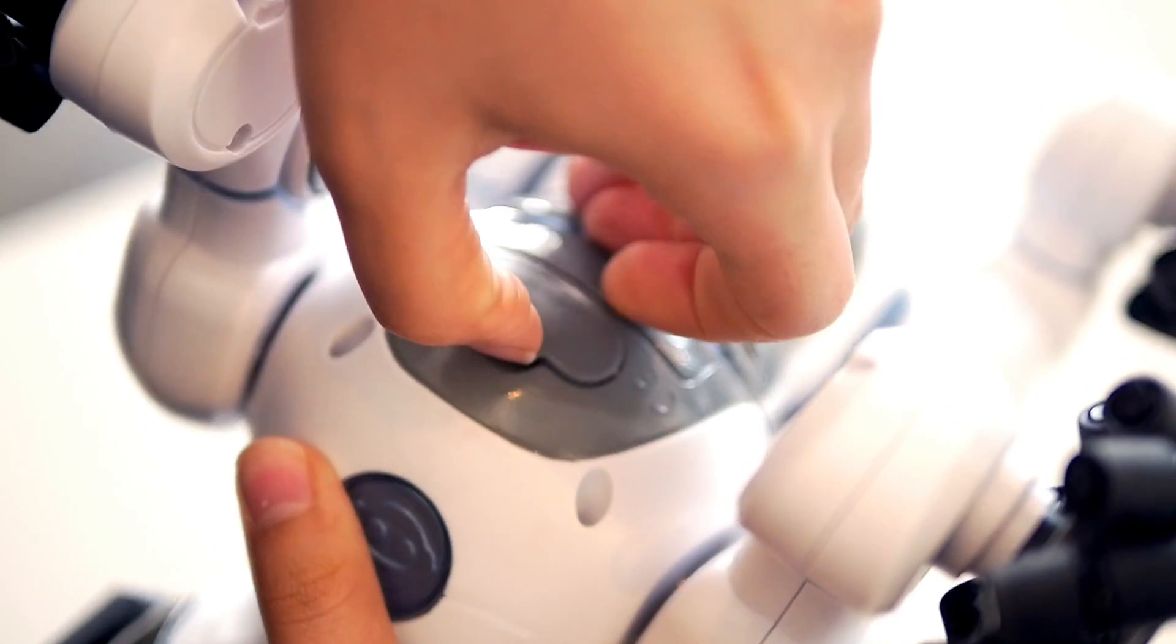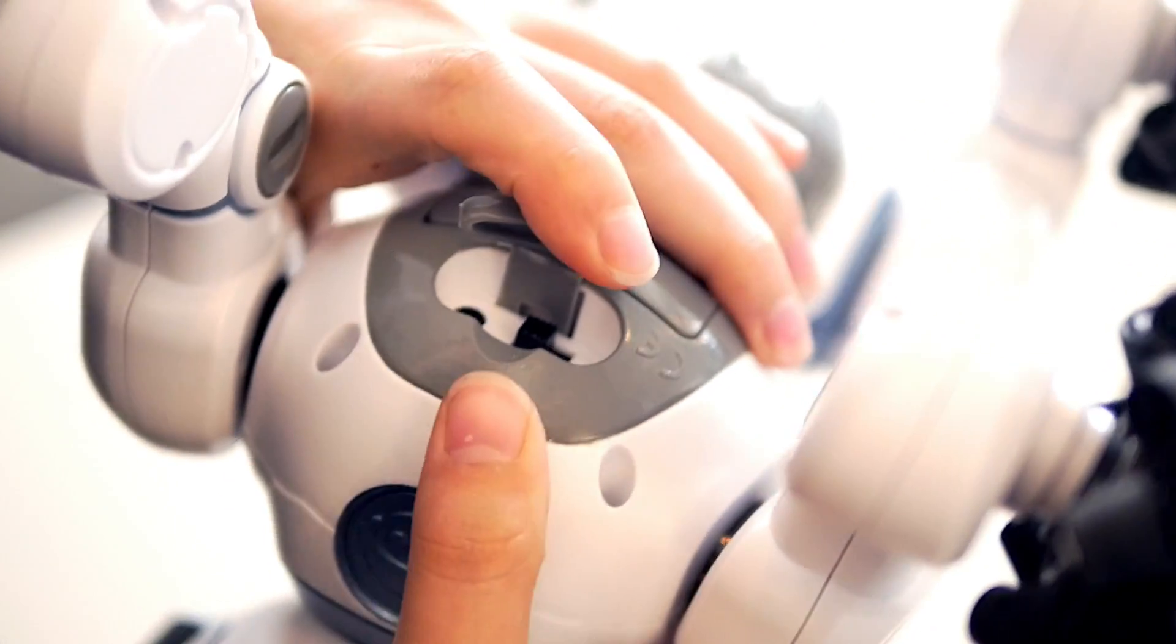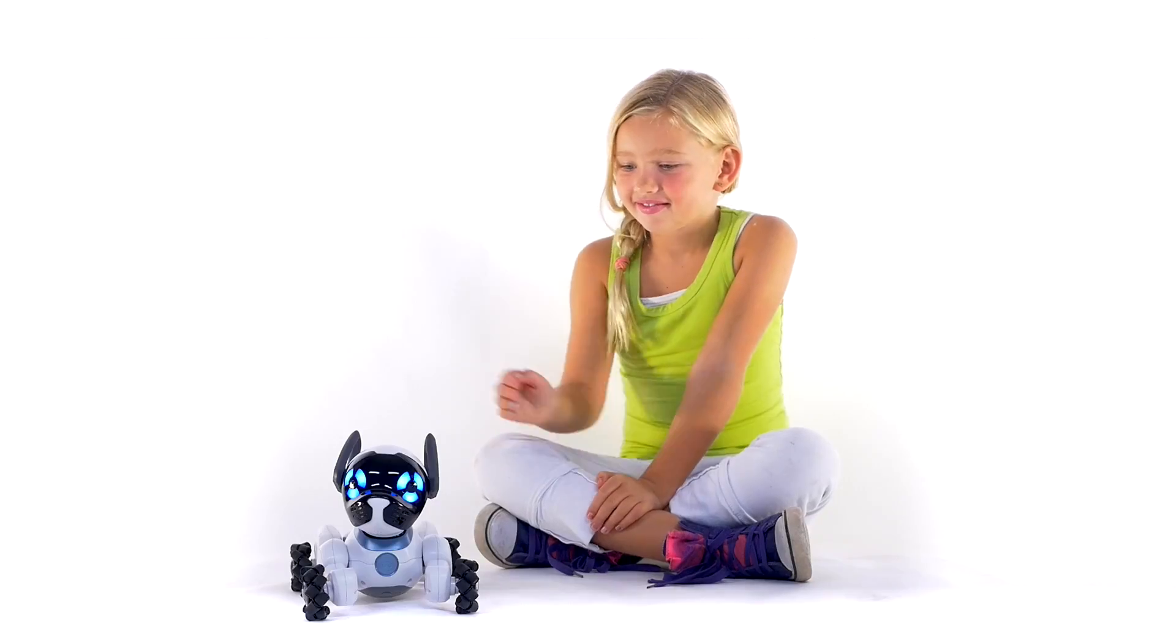First, we'll need to turn Chip on. Lift the flap underneath his belly and hit the on switch. There are many different ways to control and play with Chip, but to start, try these.